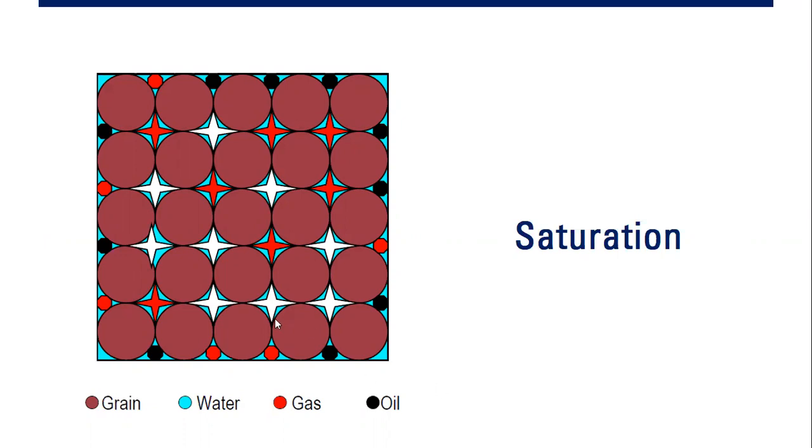This is just a depiction of saturation. You can see the grain, the rock grain, and the water in blue color, gas in red color, and oil in black color.